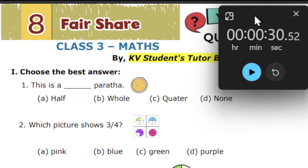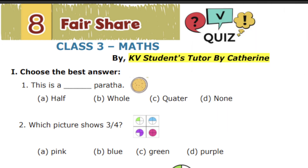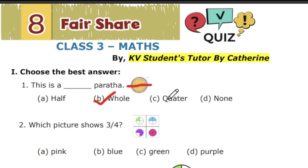30 seconds over. The correct answer is whole — whole paratha. Whole means it is full. Half means if a whole is divided into two equal parts, it is called a half. Quarter means it should be divided into four equal parts. None is not correct. So whole means the full portion — whole is the correct answer.